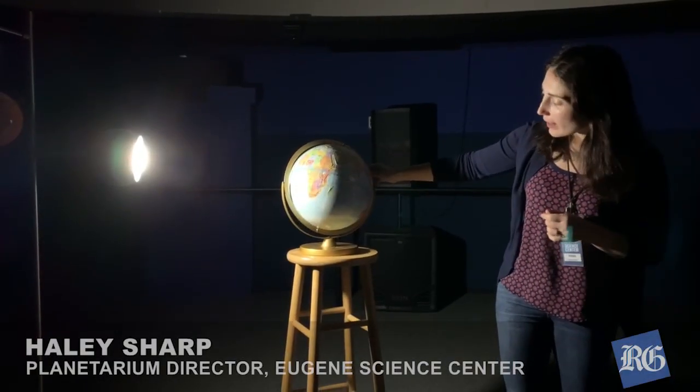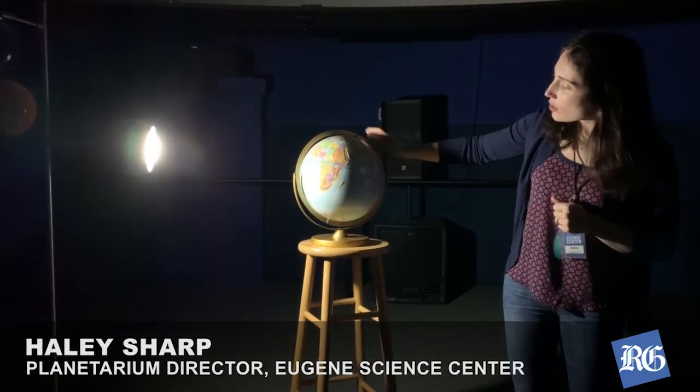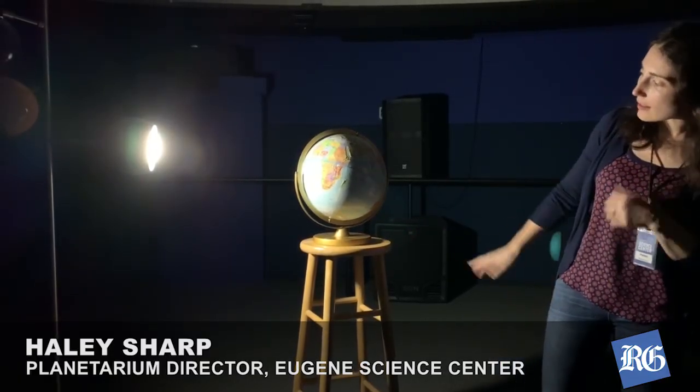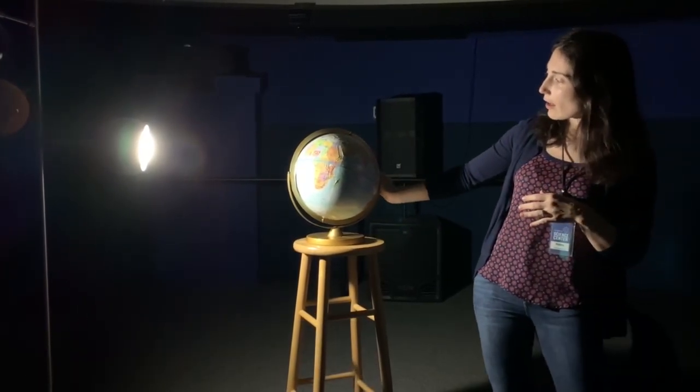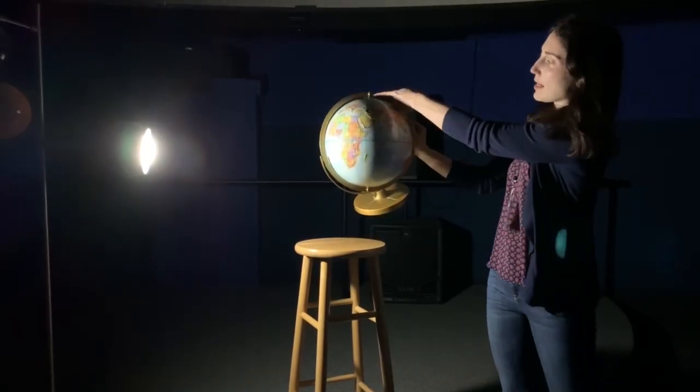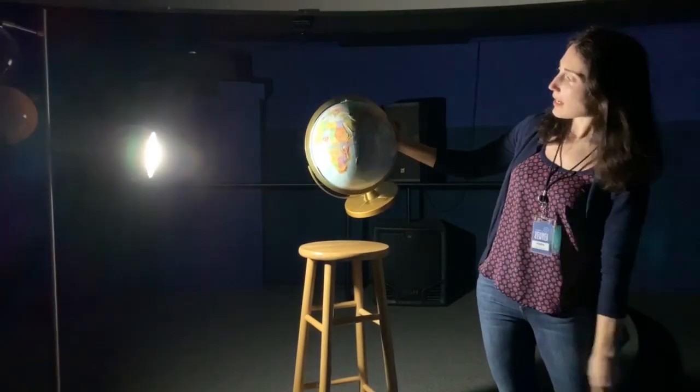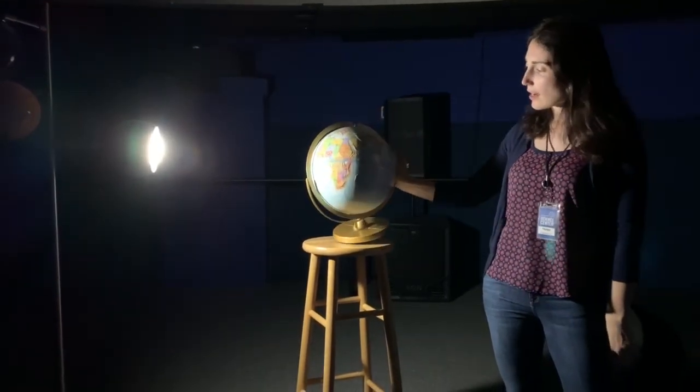So we have a globe right here and just like any other globe you might see, the axis of our globe is tilted. So if I held it upright, the North Pole is right here. If our planet wasn't tilted then the axis would just go straight up and down like this. That's not the case.